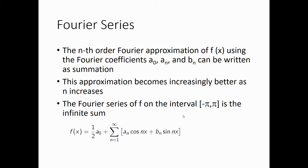So the nth order Fourier approximation of f of x using the Fourier coefficients a0, an, and bn can be written as the summation of these sines and cosines. This approximation becomes increasingly better as n increases. The Fourier series of f on the interval minus pi to pi is the infinite sum given by this equation. And they can be shown to hold for a wider class of functions such as piecewise continuous functions. In other words, when f is continuous except perhaps for a finite number of removable or jump discontinuities, then we have the Fourier series. And we saw those jump discontinuities in the square wave function earlier where we went from minus one to one very quickly.